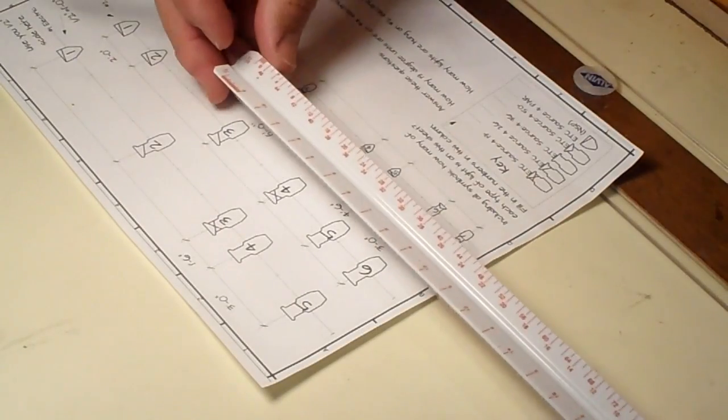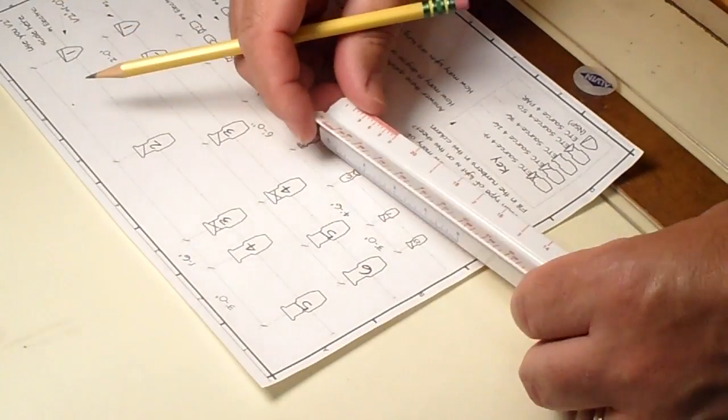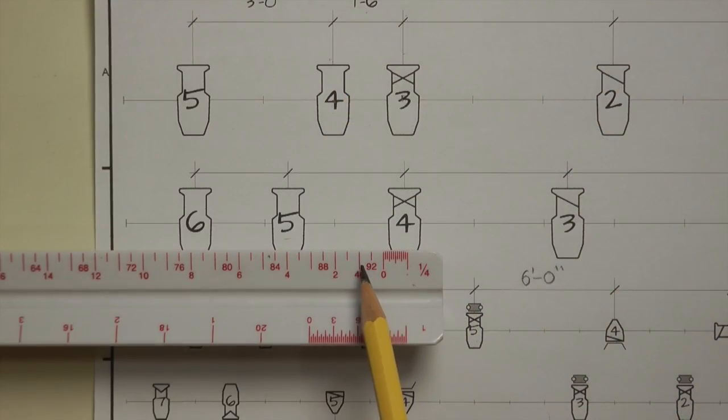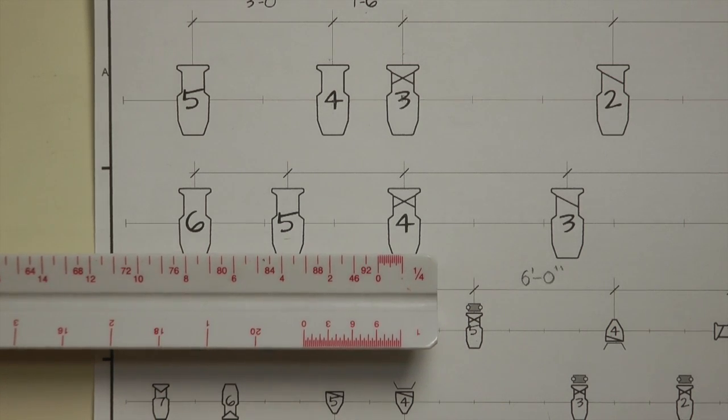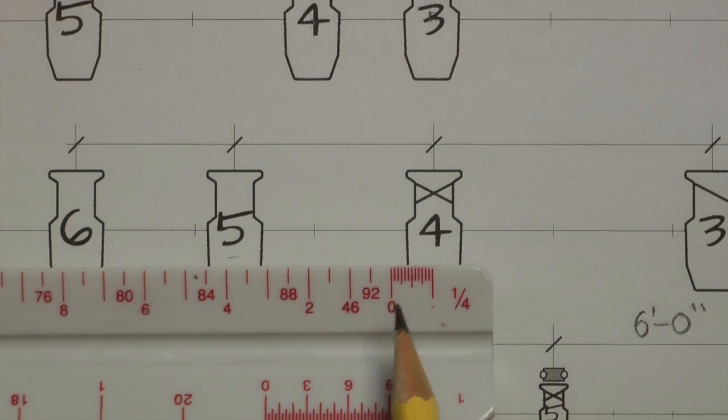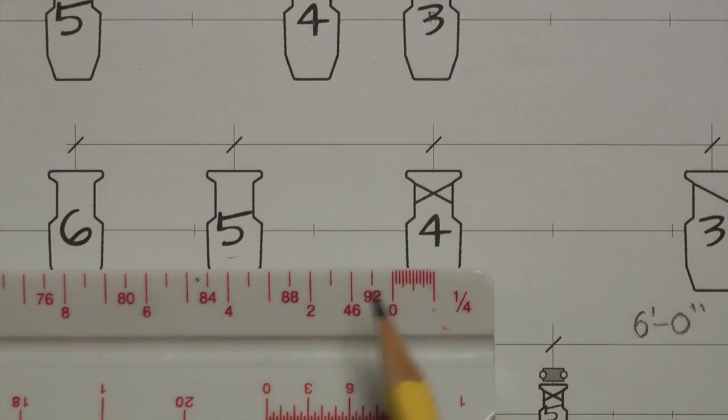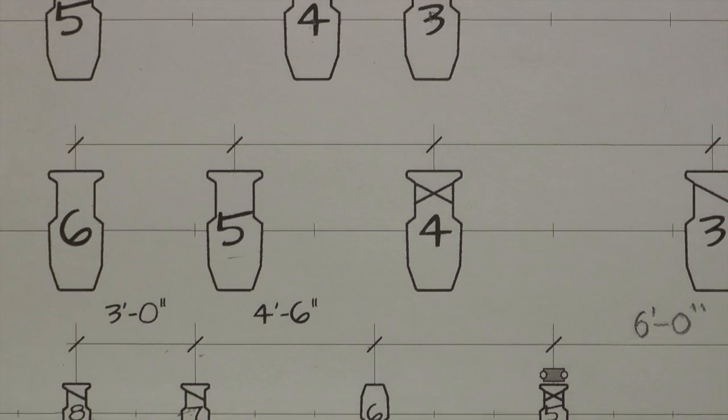Using our quarter-inch scale rule here, we have zero, two, four, six, which means that this is one foot, two foot, three feet, four feet, and so on.